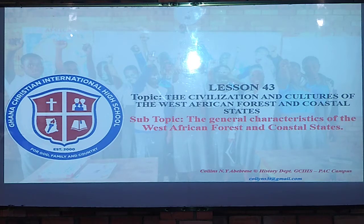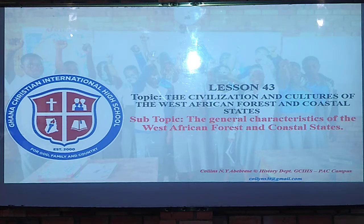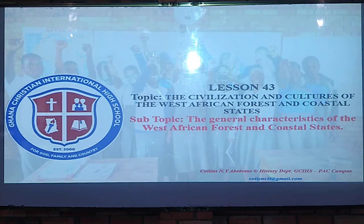Remember that in our previous discussion we looked at the West African Sudanese states. Now these are two different people. The West African Sudanese states were mostly found in the Sahara of West Africa, around Burkina Faso. Now we are looking at the West African forests and coastal states — the kingdoms that emerged along the coast and in the forests of West Africa. Those Sudanese states had no forest; they were living in the Sahara.